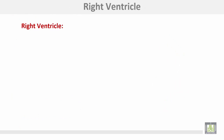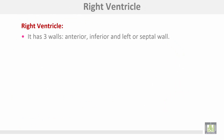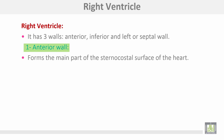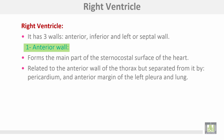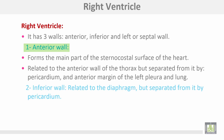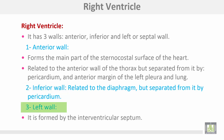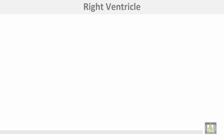The right ventricle has three walls: anterior, inferior, and the left or septal wall. The anterior wall forms the main part of the sternocostal surface of the heart and is related to the anterior wall of the thorax, but separated from it by the pericardium and the anterior margin of the left pleura and lung. The inferior wall is related to the diaphragm but separated from it by the pericardium. The left wall is formed by the interventricular septum.